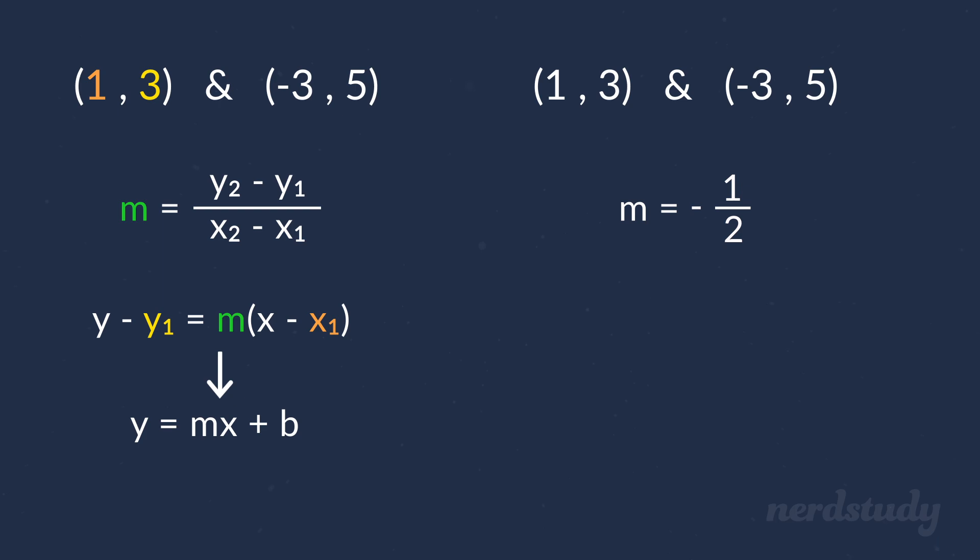Alright, now we need a point on the line to plug into our point-slope form here. And since we're given two points, we can just choose any one of them. So, let's choose (1, 3) and plug them into the formula along with our new found slope of -1/2. What we get is the following as our equation in the point-slope form.